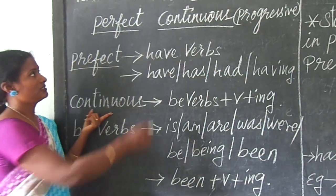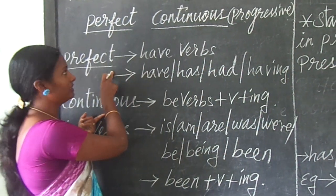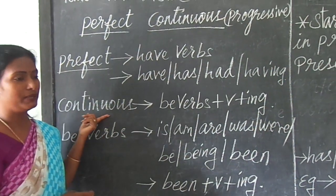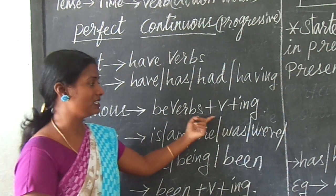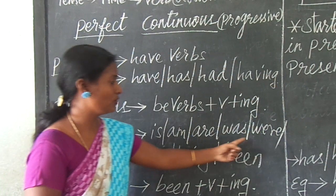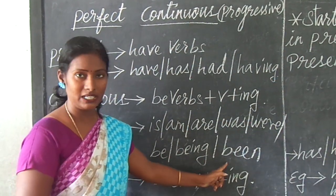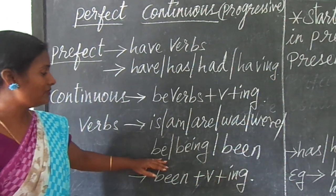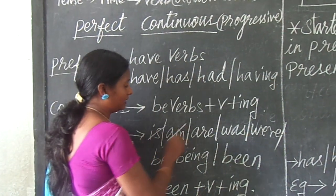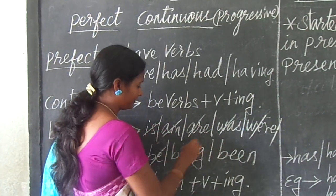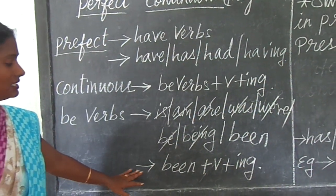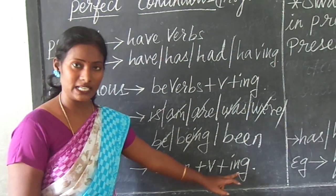And for the continuous, we have seen what is the basic for perfect, and we are going to see what is the basic for continuous tense. So here the basic for continuous tense is: be verb plus verb plus ing. So here be verbs are is, are, was, were, be, being. Since we are going to see the perfect continuous, we need only 'been'. So here the structure for continuous in perfect continuous is: been plus verb plus ing.